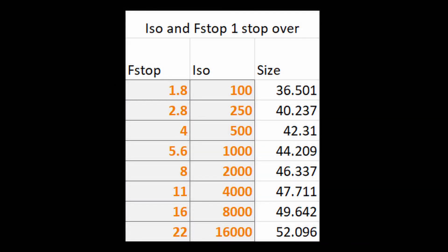The first thing we're going over is a quick and simple table showing ISO and f-stop one stop over. As you can see from the values, I'm increasing the f-stop and the ISO respectively to ensure I'm moving one entire stop of light and keeping it consistent. If you increase the ISO and f-stop to increase light available in the photo, you utilize more space on the chip.